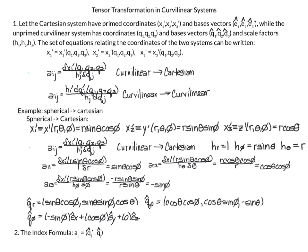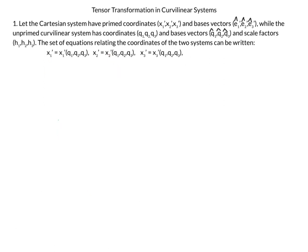We are going to start by deriving this formula. We'll let a Cartesian system have the primed coordinates x1 prime, x2 prime, x3 prime — often called x prime, y prime, z prime — with basis vectors e1 prime, e2 prime, e3 prime. Our curved linear system is the unprimed system with coordinates q1, q2, q3, basis vectors q1 hat, q2 hat, q3 hat, and scale factors h1, h2, h3.